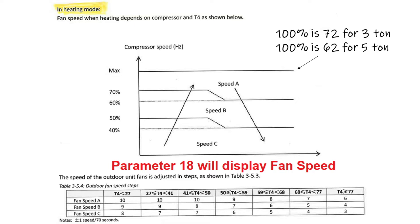So in this example, at 100% speed of the compressor, we should be in speed A and below 27 it would be fan speed 10, below temperature of 77, fan speed 6.